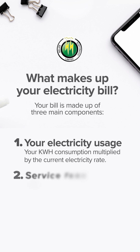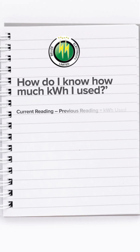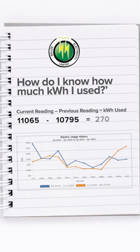Two, service fees if applicable. And three, GST. To find out how much electricity you use, subtract your previous meter reading from your current one. Current reading minus previous reading equals kilowatts used.